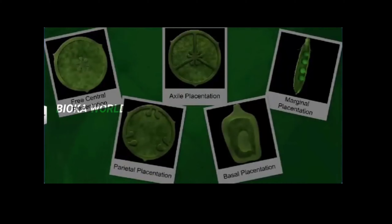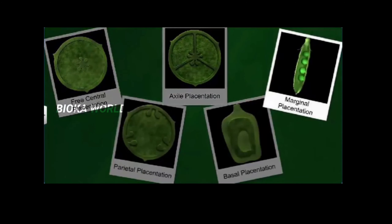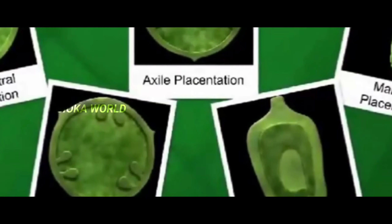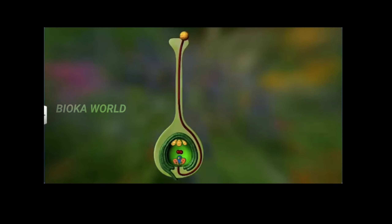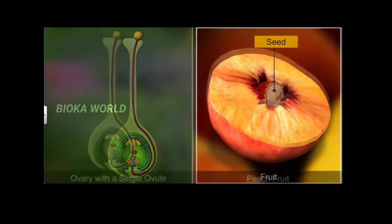The ovules may be arranged in free central, axile, marginal, parietal, or basal placentation. Moreover, after fertilization, the ovules form seeds while the ovary develops into a fruit.